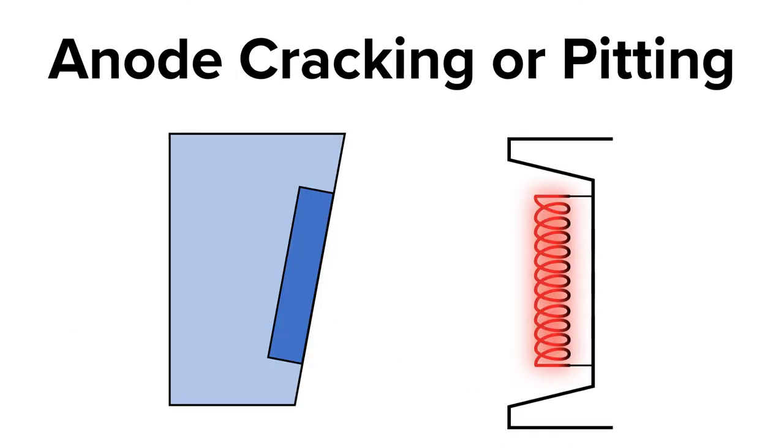Anode cracking or pitting causes total tube failure. There are a number of reasons why an anode will crack or pit. One reason is improper warming up of the x-ray tube.